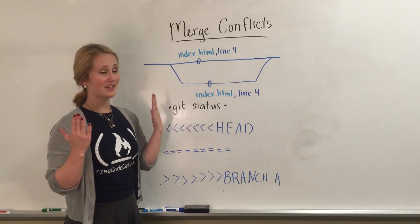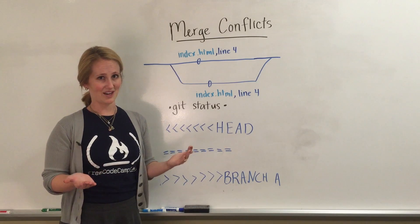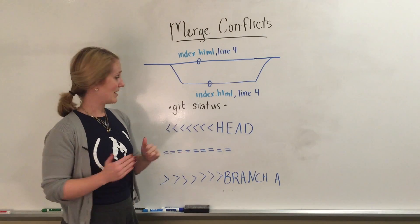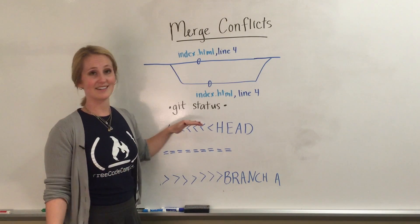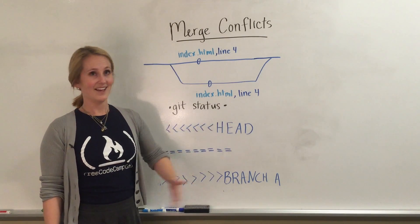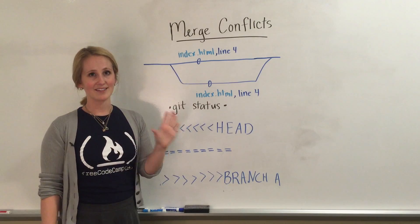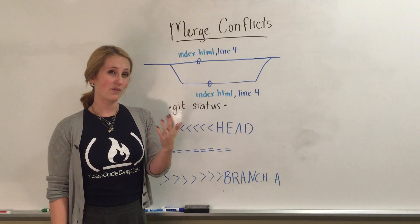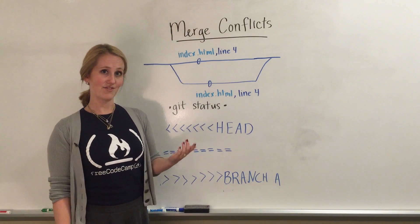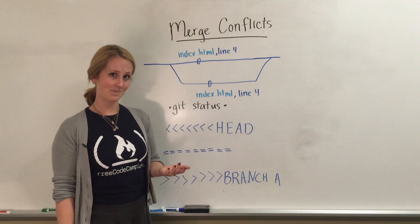So Git tells you there's a conflict. What do you do next? My favorite next step is to run git status. It's an easy way to clear my head and see exactly which files have the conflicts in them.